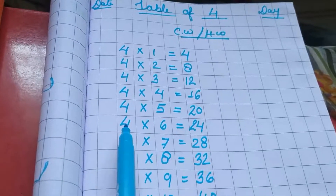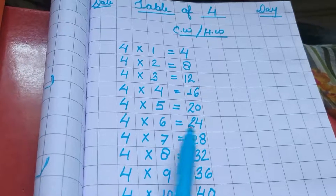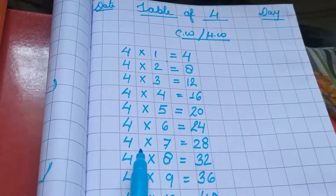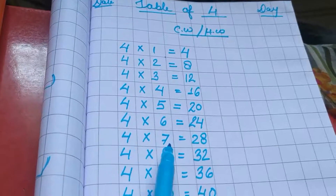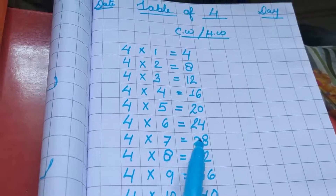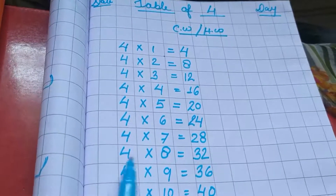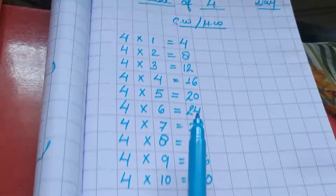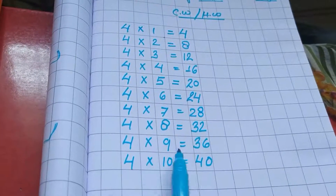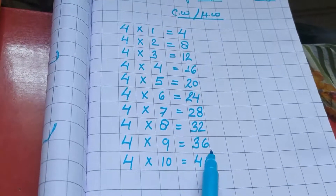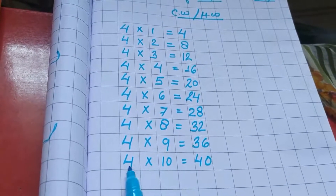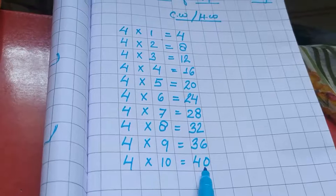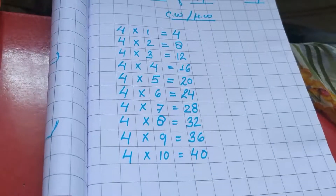Four fives are twenty. Four sixes — 4, 6 — twenty-four. Four sevens — 4, 7 — twenty-eight. Four eights — 4, 8 — thirty-two. Four nines — 4, 9 — thirty-six. Four tens — 4, 10 — forty. It's done.